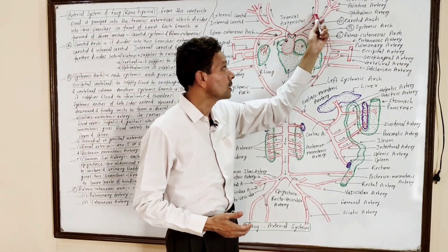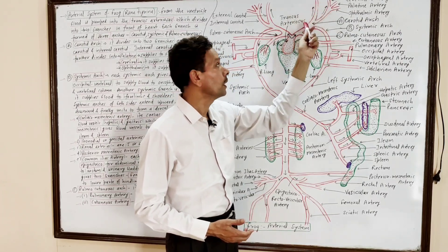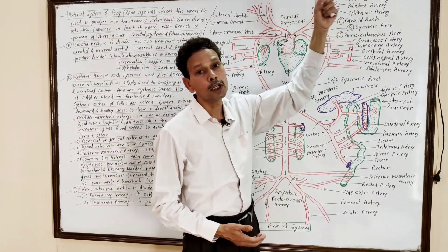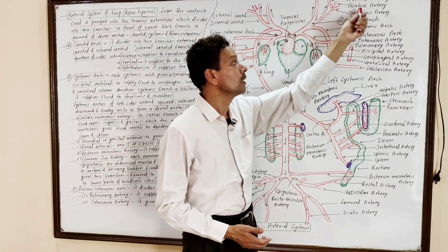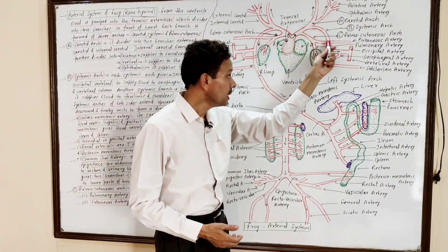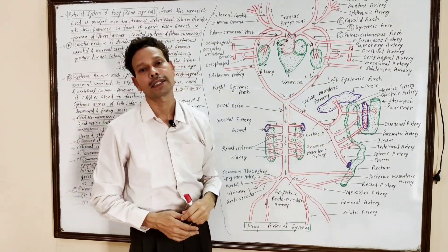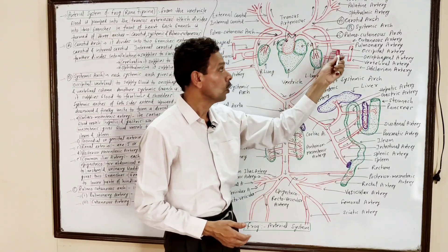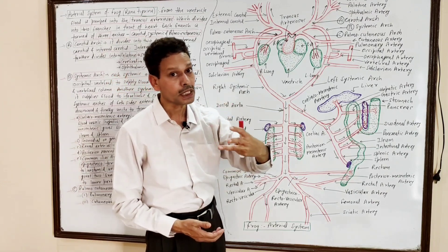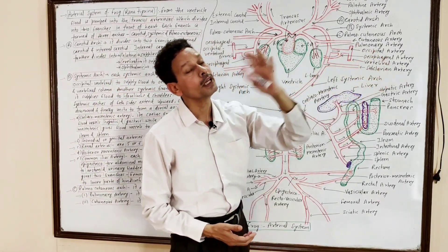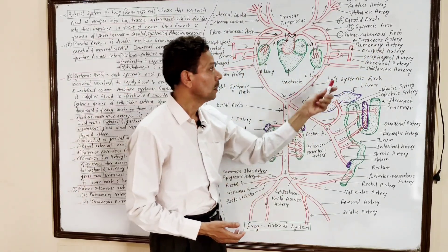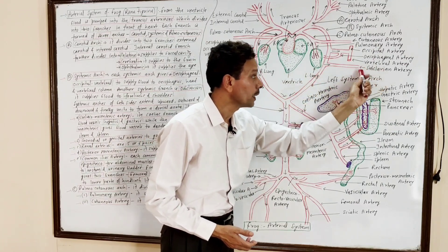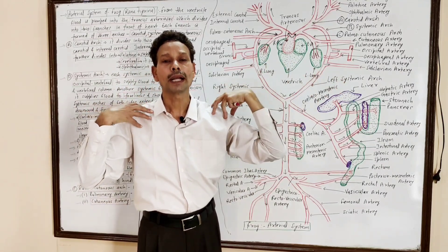To summarize: the carotid arc gives external carotid and internal carotid; internal carotid gives cerebral artery to brain, palatine artery to palate or buccal cavity, and ophthalmic artery to the eye. The systemic arc — both right and left — gives the esophageal-occipital-vertebral branch: esophageal to esophagus, occipital to brain region, and vertebral artery to vertebral column. The subclavian artery gives blood supply to forelimbs, shoulder, and neck region.